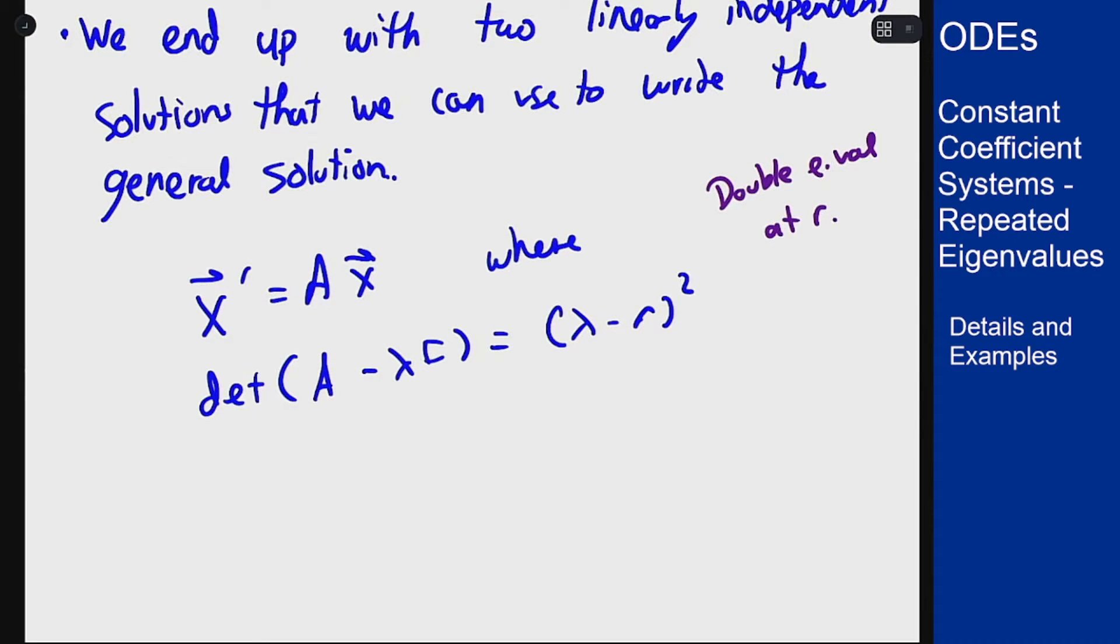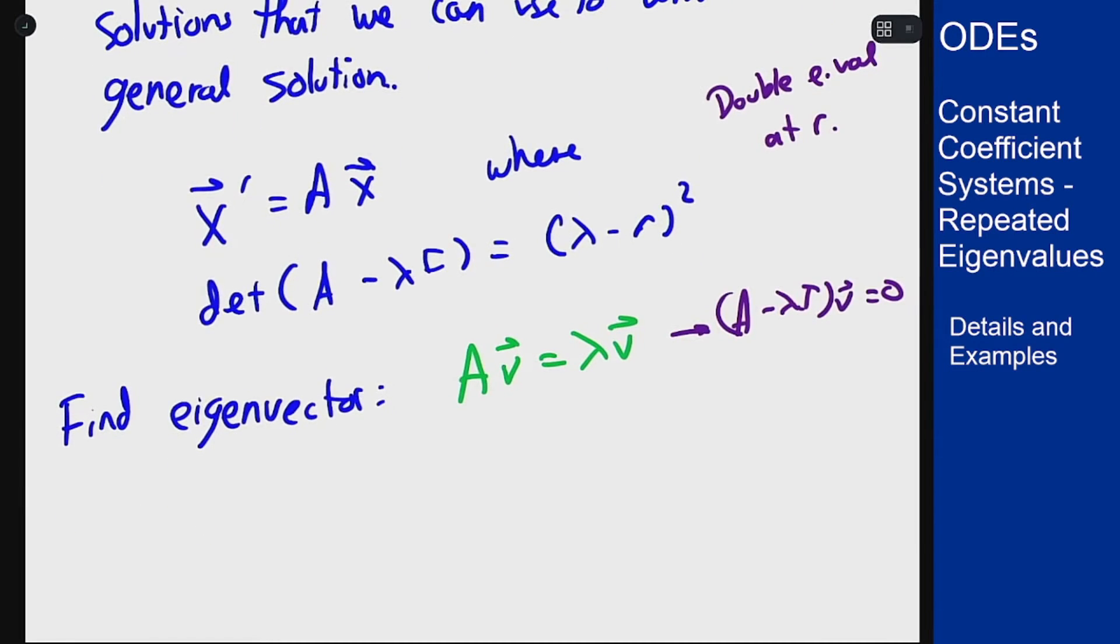So we find the eigenvector as a solution to A times v equals lambda v, or the way you generally solve it: A minus lambda I times v equals zero. And then since you only find one of these, we also want to find a generalized eigenvector to pair with it. So you find a generalized eigenvector as a solution to A minus lambda I times w equals the same vector v that we found in the previous step.